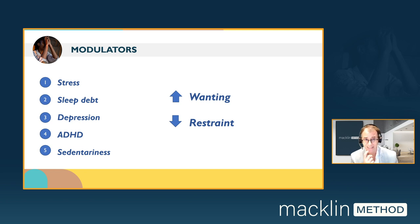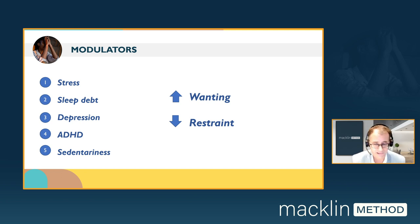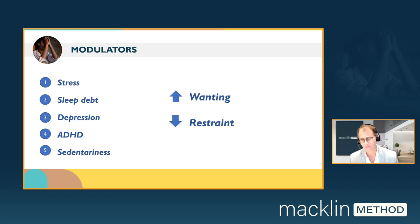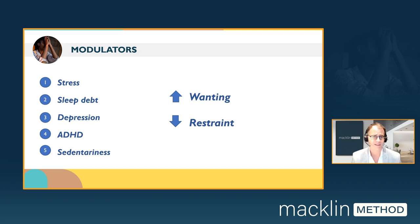We see this list of modulators and are reminded that struggling with weight is difficult enough — managing a motivational system with a small self-regulation capacity to begin with is a difficult task. But add to those difficulties these modulators that will both increase the strength of wanting and decrease the capacity of self-regulation in the moment.